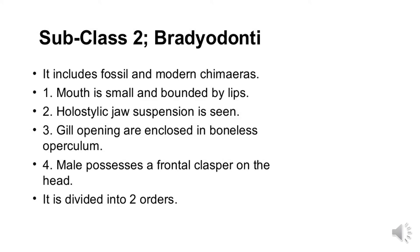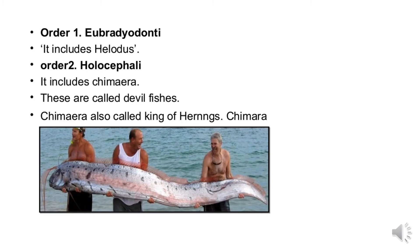Subclass 2 is Bradyodonti, which includes fossils and modern chimaeras. The mouth is small and bounded by lips. Jaw suspension is holostylic and the tail opening is enclosed in a boneless operculum. The male possesses a frontal clasper on the head region. This class is further divided into two orders: order 1 Ubradyodonti, which includes Helodus fishes, and order 2 Holocephali, which are called devil fishes or king of the pharynx, having a long narrow pointed body.